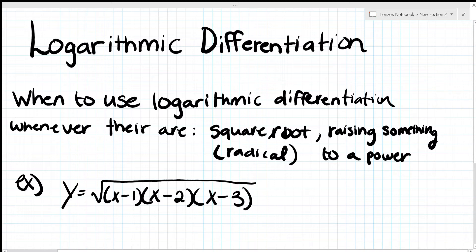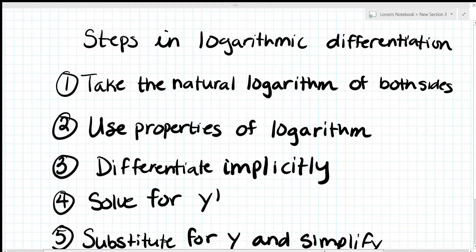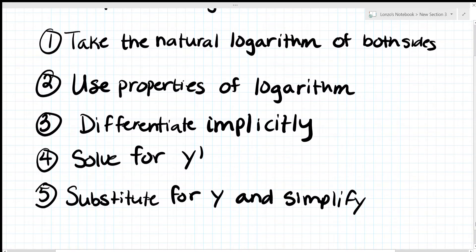Let's go over the steps in logarithmic differentiation. Step one: take the natural log of both sides. Step two: use the properties of logarithms — that's really important. Step three: differentiate implicitly. Step four: after you differentiate implicitly, solve for y prime or dy/dx. Step five: substitute for y and simplify.